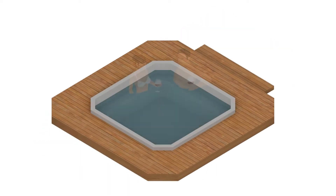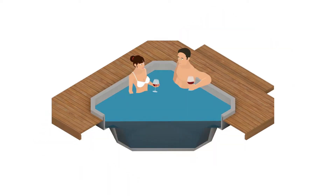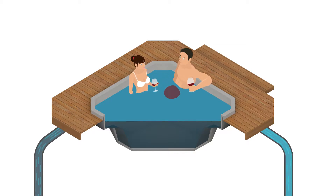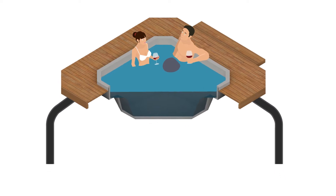A hot tub, for example, requires clean water to operate. However, the water in the tub quickly becomes contaminated when the hot tub is in use. Chlorine is typically used to manage this, which can cause irritation and discomfort to its users.